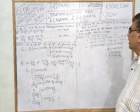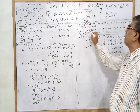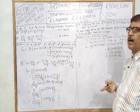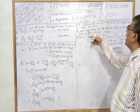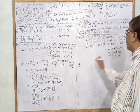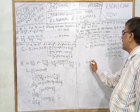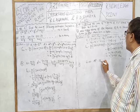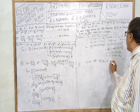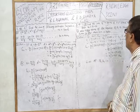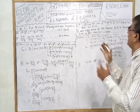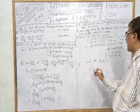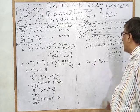Question B: how many terms of an AP must be added to get a given sum? When a question says 'how many,' you need to find the value of n. The given AP is 18, 16, 14, and so on. We need to find how many terms when added give a sum of 0.